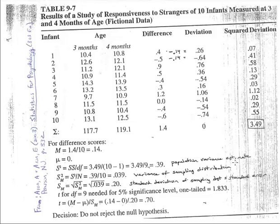Once we've calculated the population variance estimate, we're interested in determining the nature of the sampling distribution. We use the population variance estimate to help with that. The first step is determining the variance of the sampling distribution by taking our population variance estimate of 0.39 and dividing it by the sample size. That gives us a value of 0.039 squared units. The population variance estimate and the variance of the sampling distribution are both expressed in squared units.